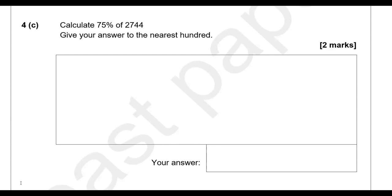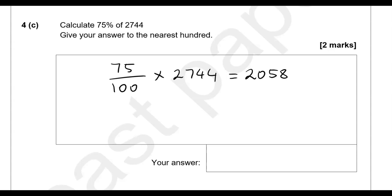Calculate 75% of 2,744 and give the answer to the nearest 100. 75 divided by 100 times 2,744 gives 2,058. The hundreds digit is 0, and looking to its right we have a 5, so we round up — this becomes 2,100.